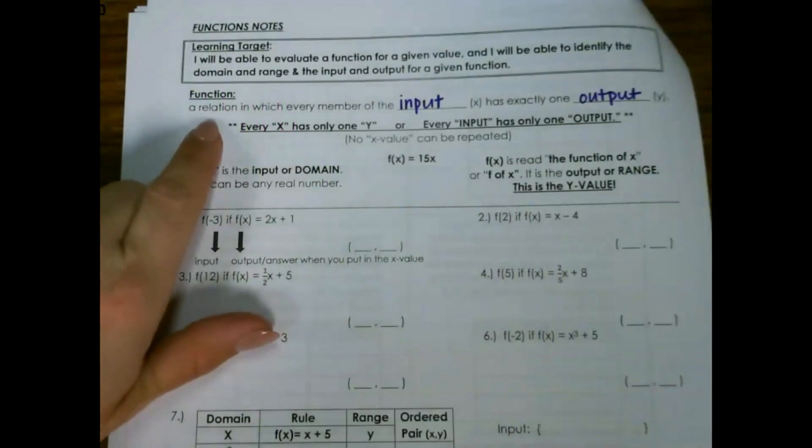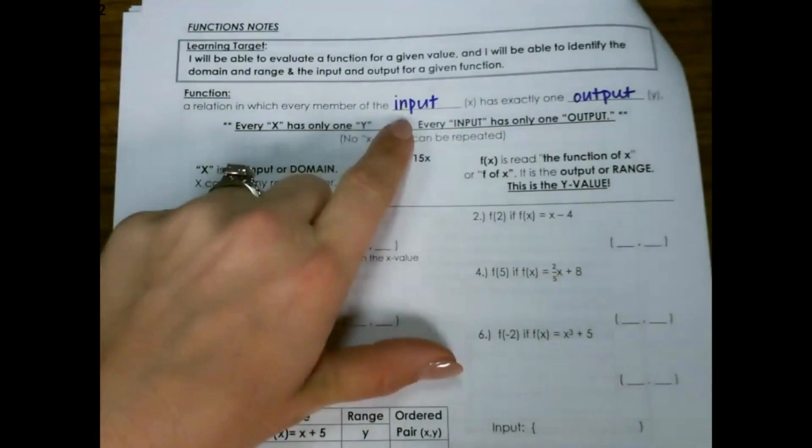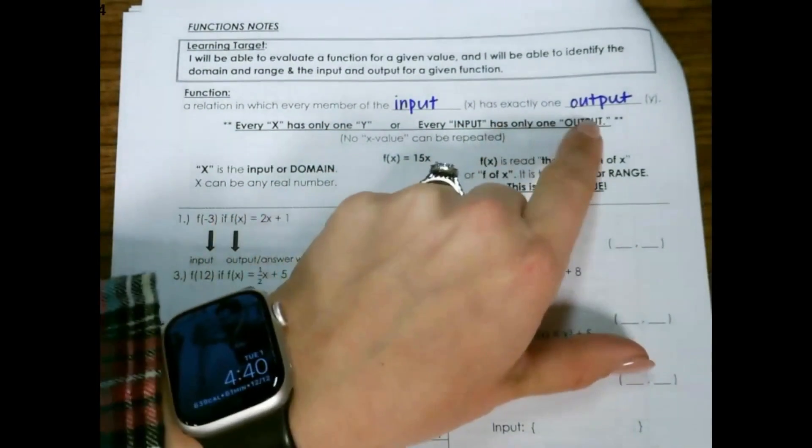Evaluating functions. A function is a relation in which every member of the input, or x, has exactly one output, or y.